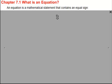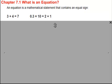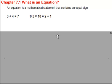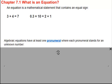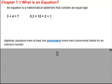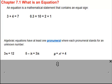For example, 3 plus 4 equals 7 — that's an equation. 0.3 times 10 is equal to 2 plus 1 — that's also an equation. An algebraic equation is just an equation that has at least one pronumeral or one variable, and a pronumeral stands for an unknown number.